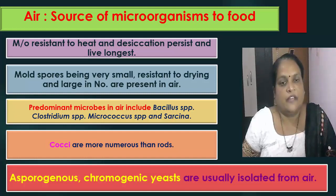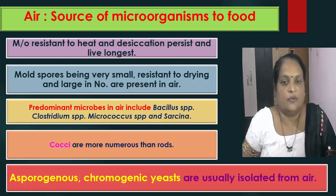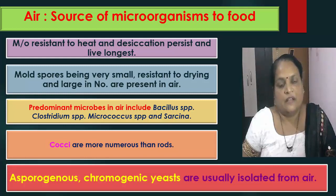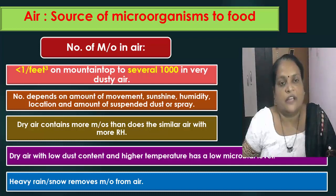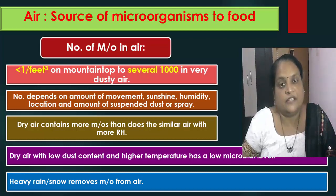Mold spores are very small, resistant to drying and present in large numbers, and therefore they are commonly found in the air. Predominant microorganisms in the air include Bacillus species, Clostridium species, Micrococcus species and Sarcina. Cocci are more numerous in the air than rods. Asporogenous chromogenic yeasts are usually isolated from the air. On a mountain top, very few microorganisms are found — less than one per cubic foot. But in dusty air, the number may be several thousand per cubic foot.